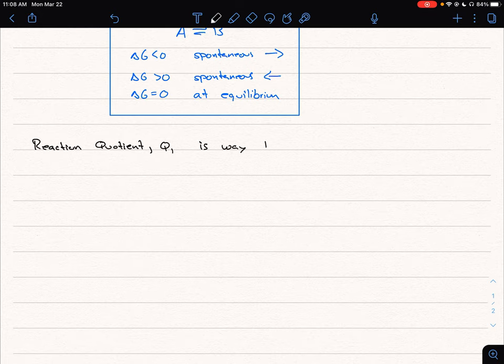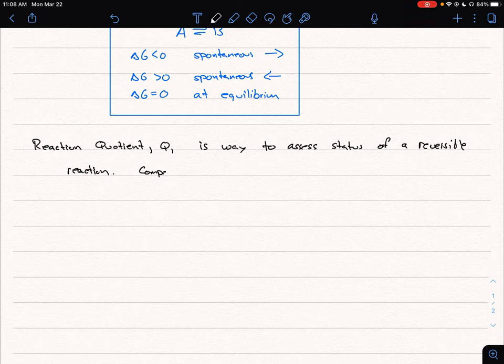this is a way to assess the status of a reversible reaction. What we mean by that is we were comparing Q and K, and that'll help us tell which direction the reaction's going by comparing Q and K.